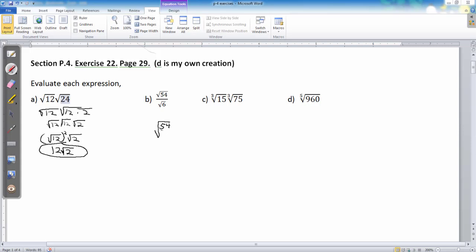And that means I can reduce this. That will be the square root of 9. And then, if you know 9 is a perfect square, you'll know you'll get 3.